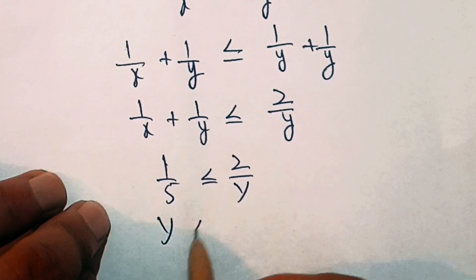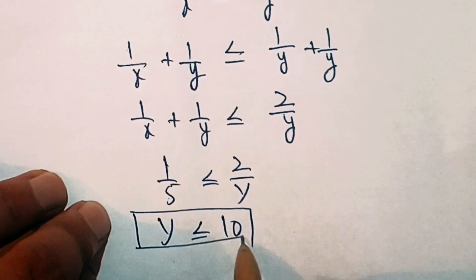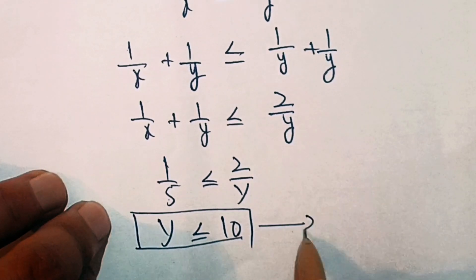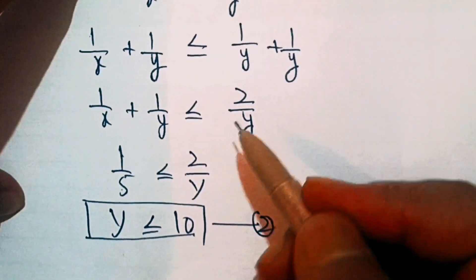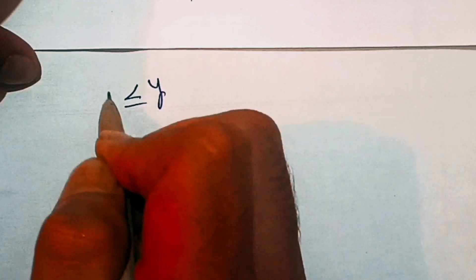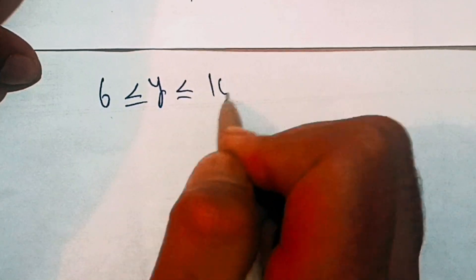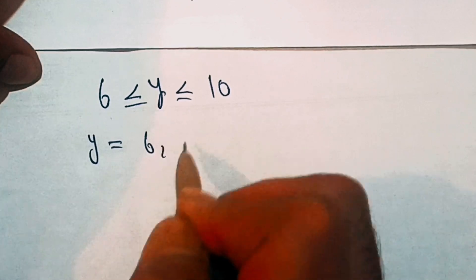So y ≤ 10. Let's call this equation (2). From equations (1) and (2) combined, we have 6 ≤ y ≤ 10, so y can be 6, 7, 8, 9, or 10.